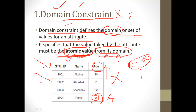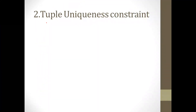Also, if the name attribute is divided into first name and last name, that situation is not atomic. As I already discussed in the previous video, a value must be atomic — it cannot be further divided. Next one is tuple uniqueness constraint.